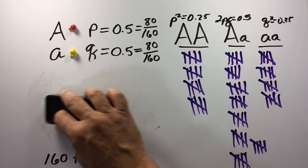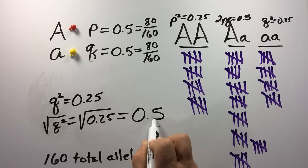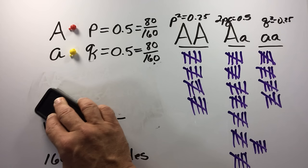This example again used incomplete dominance. However, if it had been a situation of complete dominance, the square root of the frequency of the homozygous recessive individuals would likewise bring us to a calculation of an allele frequency of 0.5.